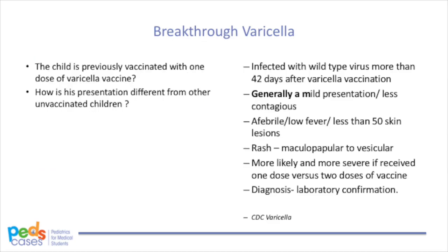Let's talk about breakthrough varicella. With the introduction of universal immunization, varicella is now primarily seen in unimmunized children or in children too young to be immunized. However, there is now a new entity called breakthrough varicella. It is defined as varicella infection with wild-type varicella virus that occurs 42 days or more after vaccination — essentially a failure of vaccination to fully protect against infection.